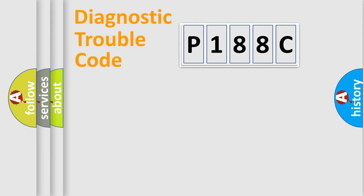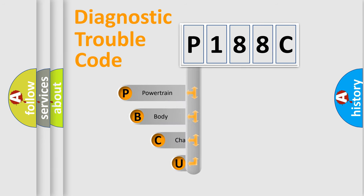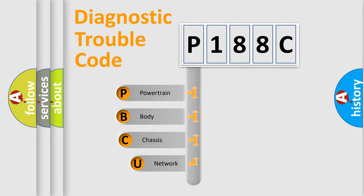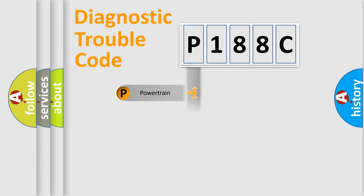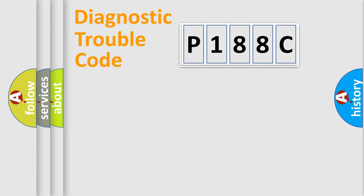First, let's look at the history of diagnostic fault code composition according to the OBD2 protocol, which is unified for all automakers since 2000. We divide the electric system of the automobile into four basic units: Powertrain, Body, Chassis, and Network.